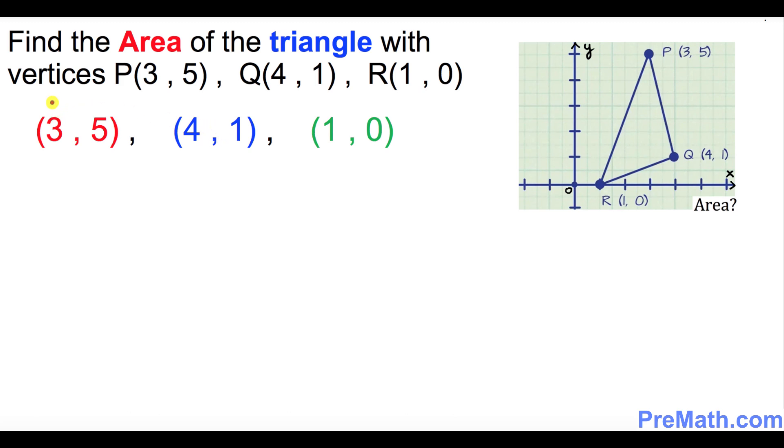So this 3 and 5 I'm going to call x1 y1, and then the second vertex I'm going to call x2 y2, and the third vertex I'm going to call x3 and y3.